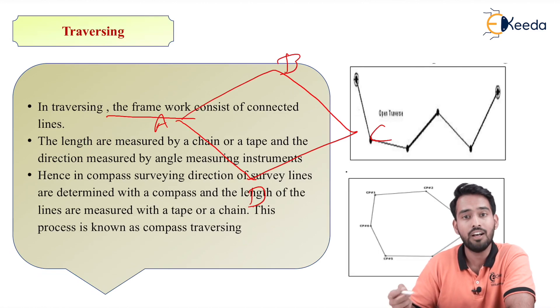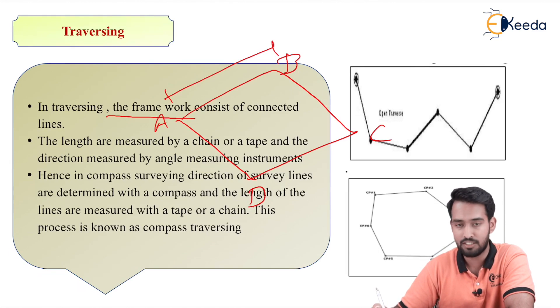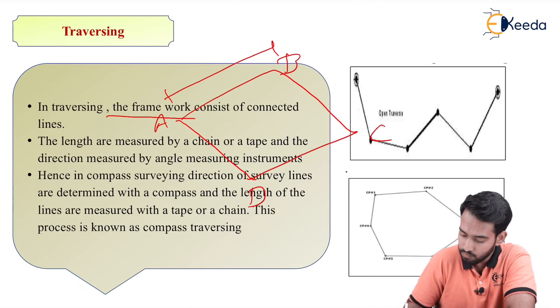For measuring lengths we can use chain or tape—measuring AB distance, BC distance, we can use chain or tape. And for measuring the directions or angles we have to use compass, whether prismatic compass or surveyor compass.